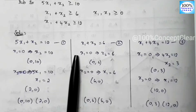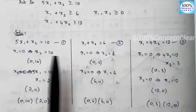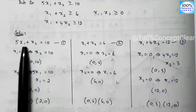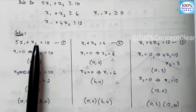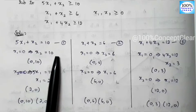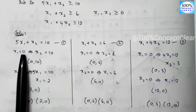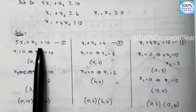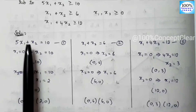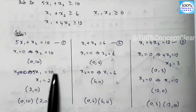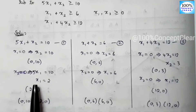Now we are going to use a graphical method and find two points for each equation. For the first equation, set x1 to 0: 5 into 0 plus x2 equals 10, so x2 equals 10, giving point (0, 10). Next, set x2 to 0: 5x1 equals 10, so 10 divided by 5 equals 2, giving x1 equals 2, so the point is (2, 0).